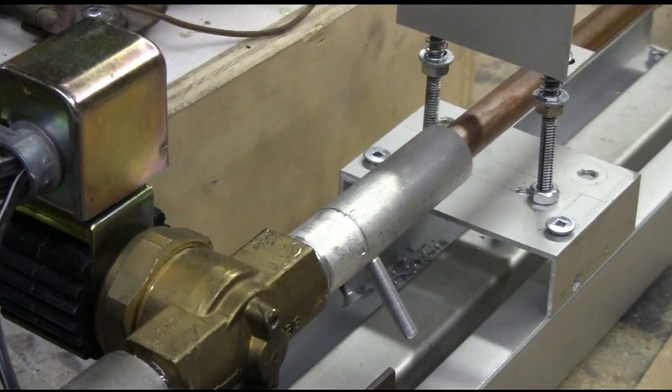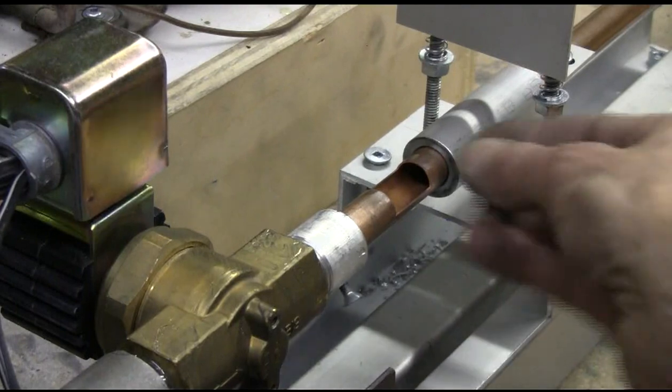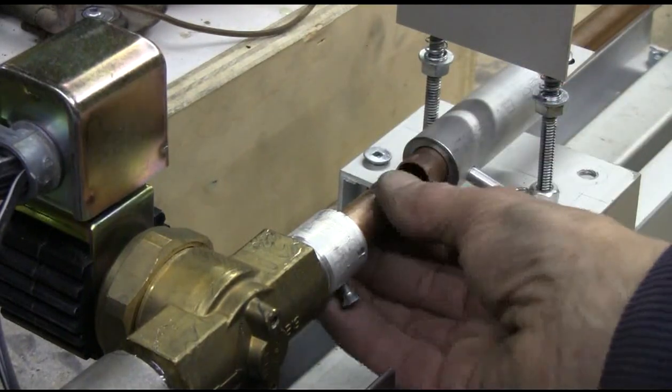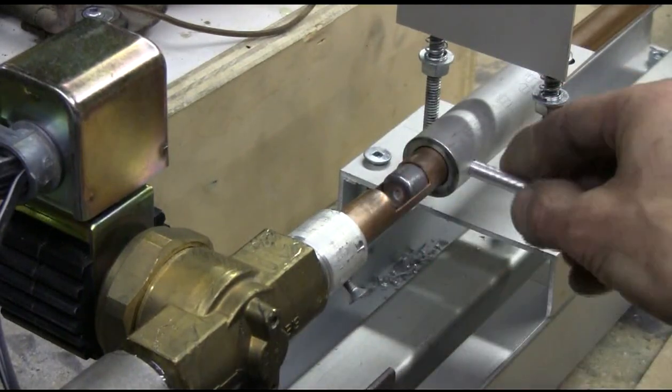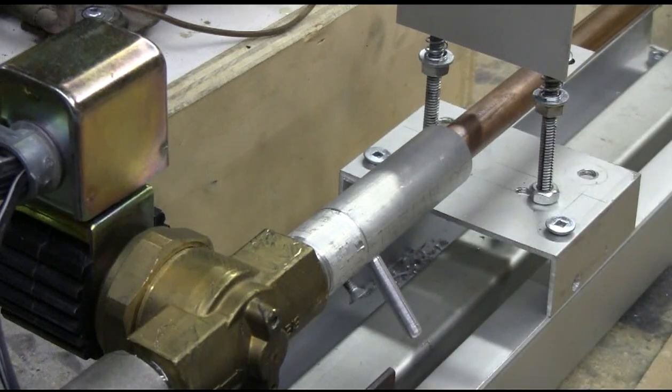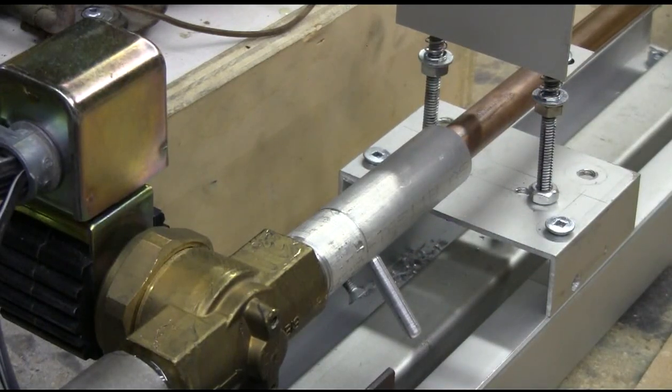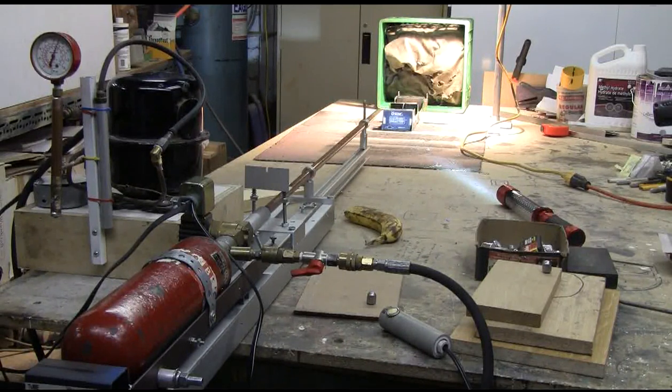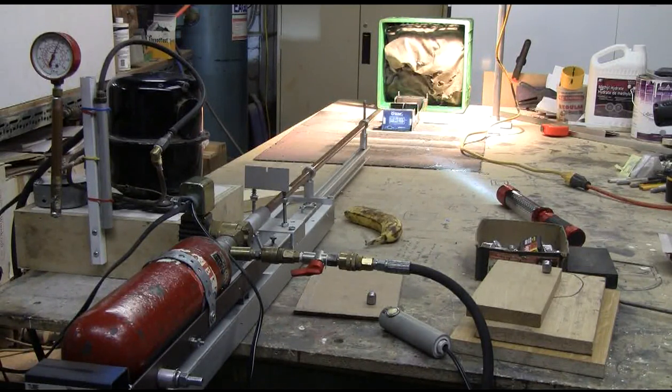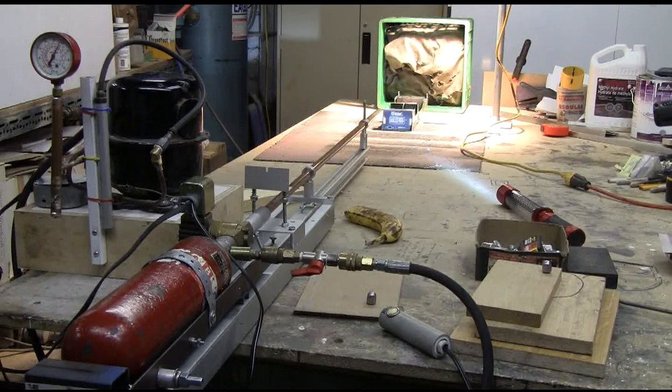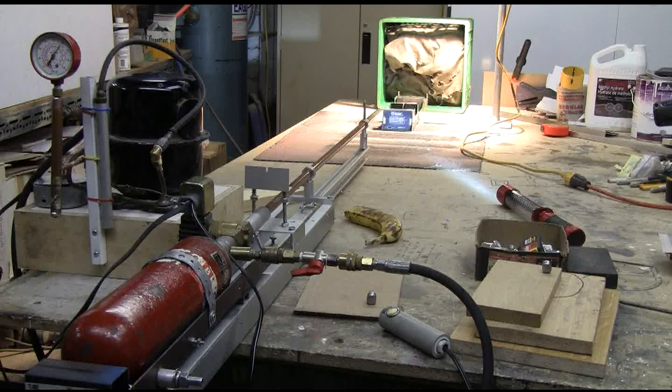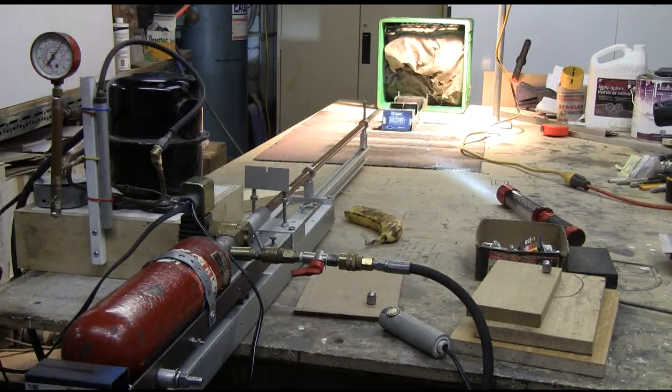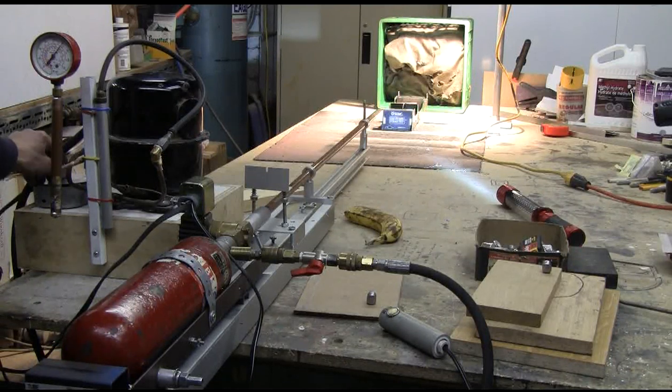So we'll load a 360 grain cast lead slug. This will be a test shot over the chronograph at 300 psi. 360 grain slug, caliber 565, 45-inch barrel. We've reached pressure.